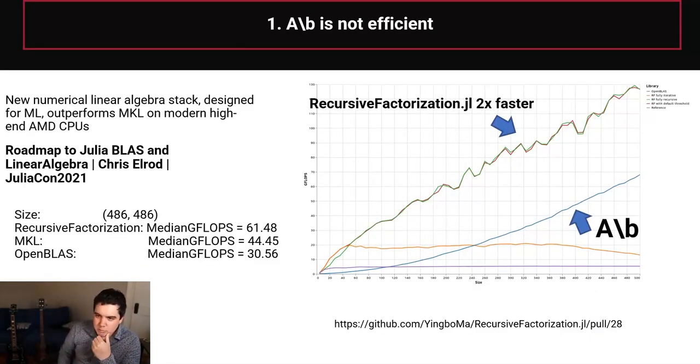So first of all, A backslash B is not efficient because it actually turns out that there's a lot of computational details about how you can implement something as simple as LU factorizations. So here I'm showing you a difference between the package RecursiveFactorization.jl, which is a pure Julia implementation of LU factorizations, and here is A backslash B's default with OpenBLAS. And so, hey, using RecursiveFactorization.jl is two times faster.